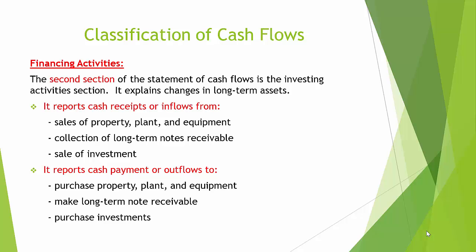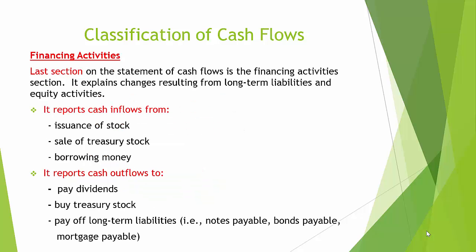The last section on the statement of cash flows is the financing activities section. It explains changes resulting from long-term liability and equity activities. It reports cash inflows from issuance of stock, sale of treasury stock, and borrowing money. It reports cash outflows to pay dividends, buy treasury stock, and pay off long-term liabilities such as notes payable, bonds payable, and mortgage payable.